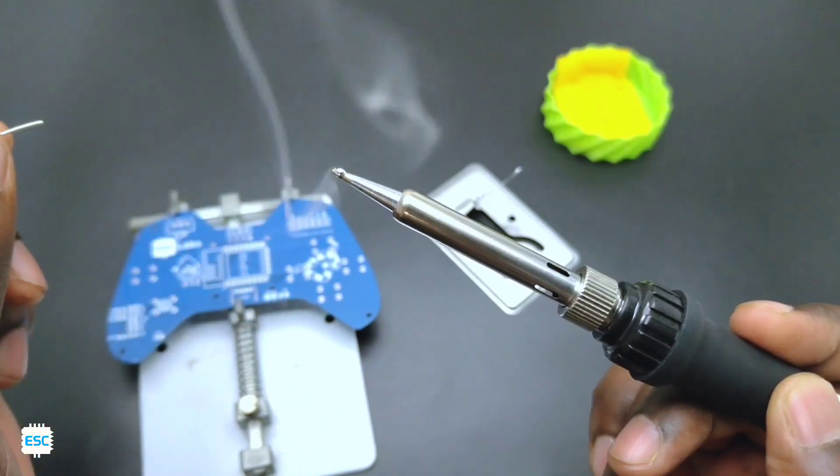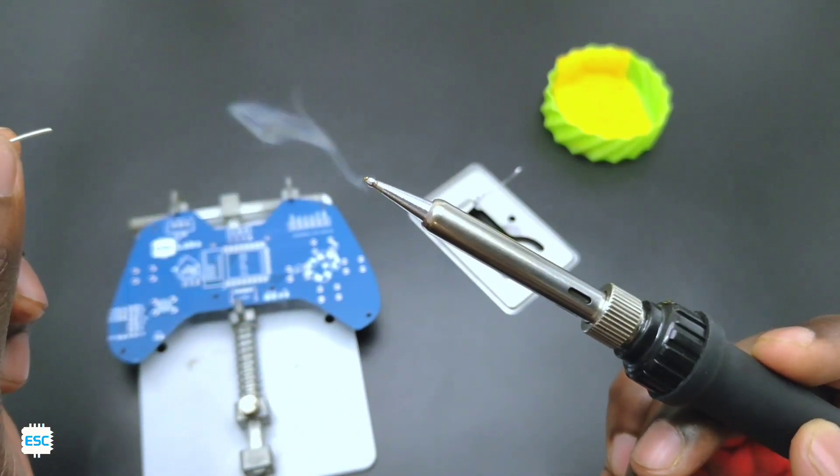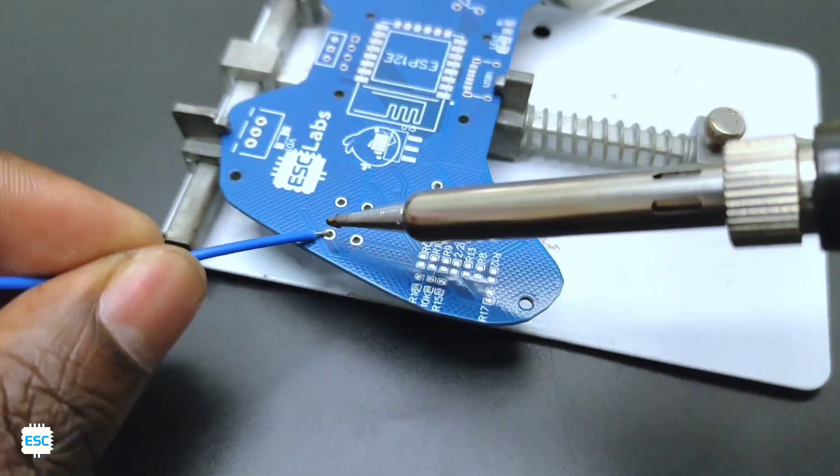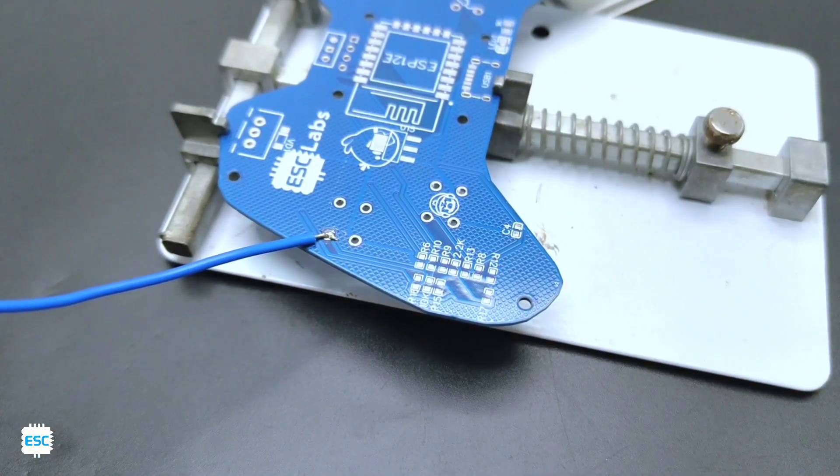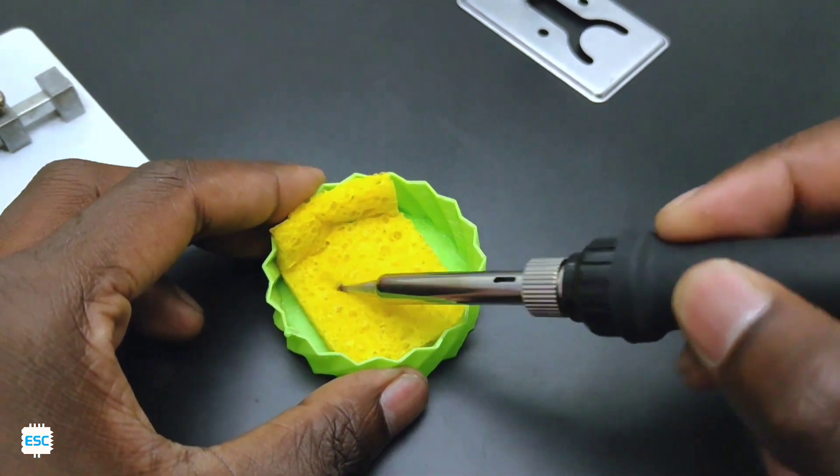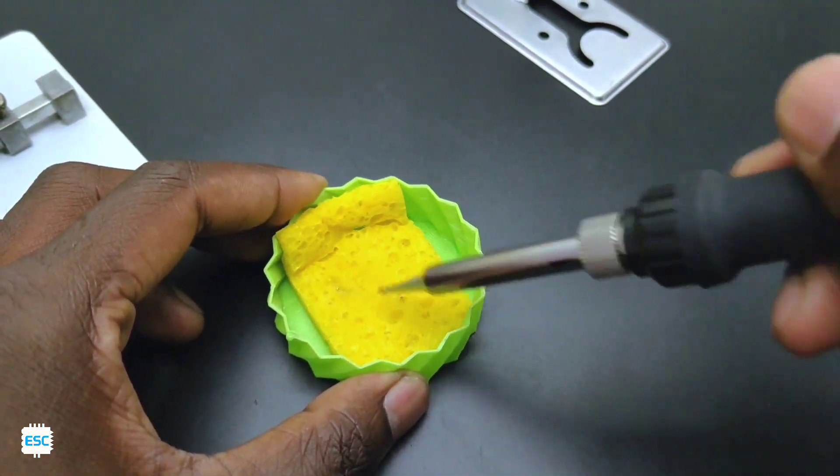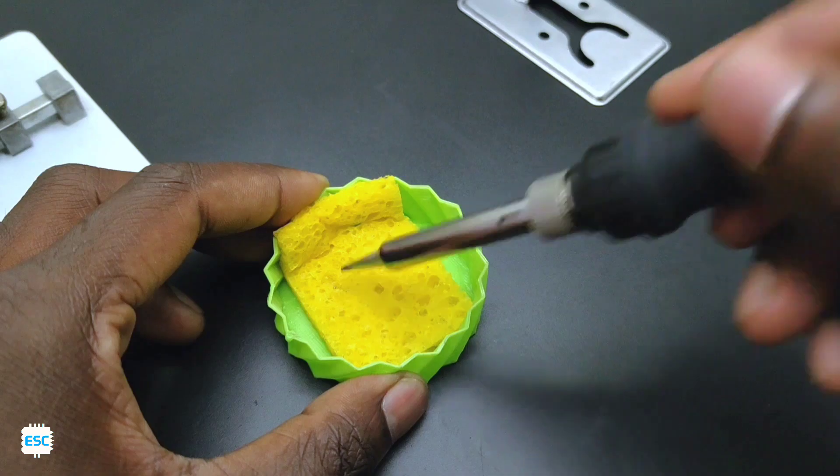Here I'm gonna solder a small wire to my PCB. Place the wire to the soldering point and apply the soldering iron to it and that's it. You can see the result. It's better to clean the tip after soldering, just rub the tip on this sponge for that.